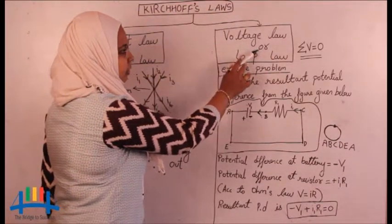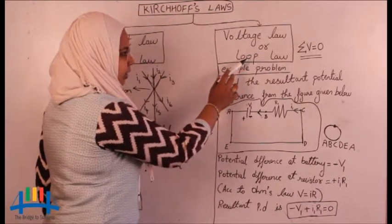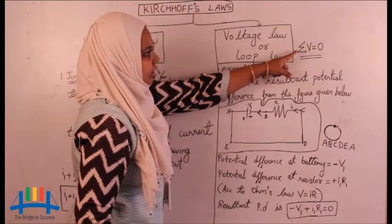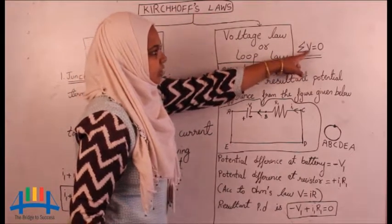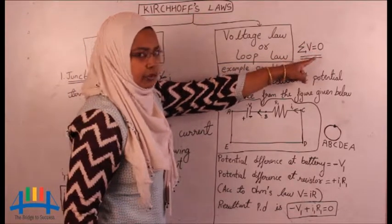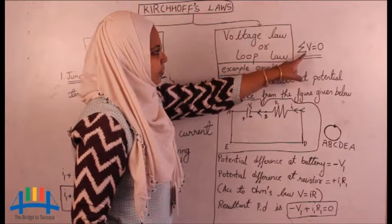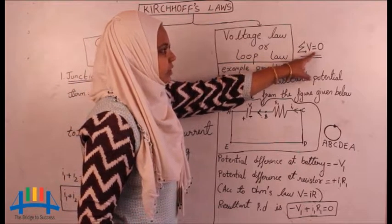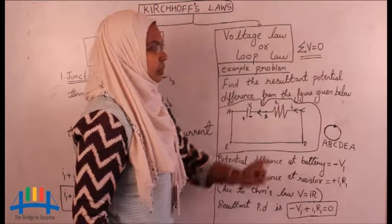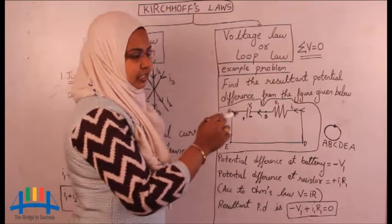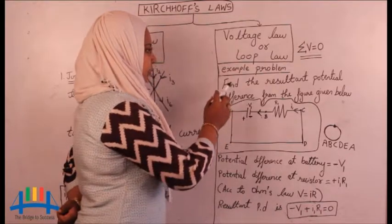Now let us go to the second law, which is called the voltage law or loop law. In the first law we said that the sum of current is equal to 0. In the second law, the sum of potential difference is equal to 0.